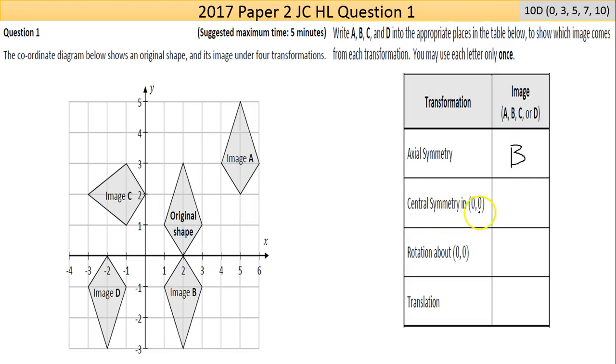Now central symmetry in (0,0) is when you're moving a shape through the origin. So you see this point here moves onto the origin and on here. This shape here goes along the x-axis. If you follow all the different vertices of this quadrilateral, you'll see that image D would look to be the best answer there.